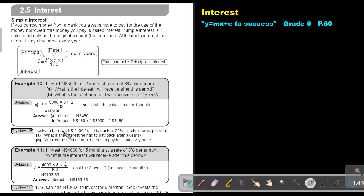But what is the total amount I will receive back after 2 years? That will be the 480 plus the 3,000, so it's $3,480. I want you to do Try Now 10 number A as well as number B. You can stop the video and as soon as you are finished, you can continue with the video.